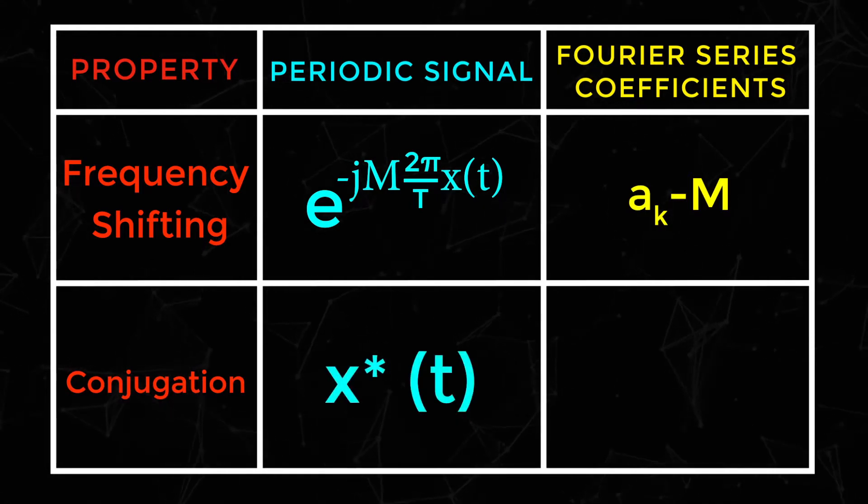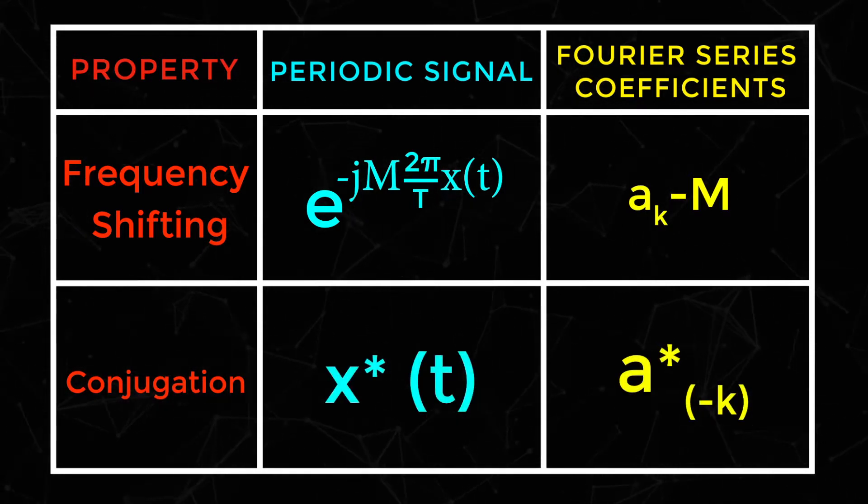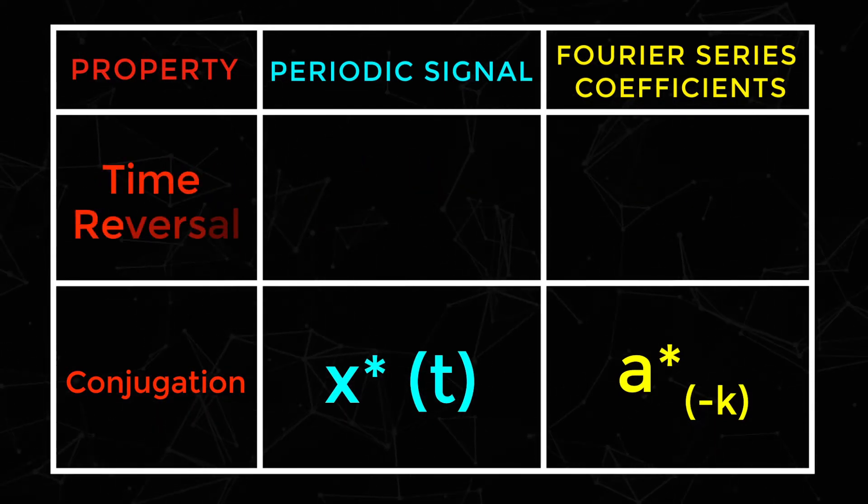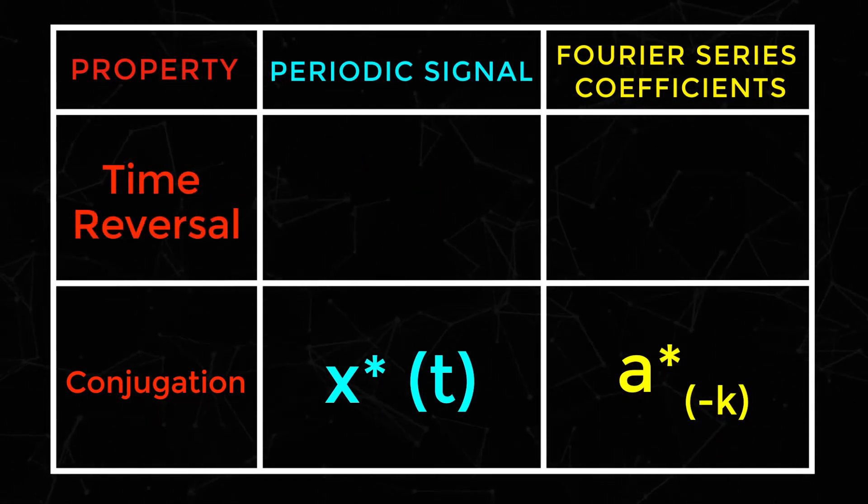Conjugation: Periodic signal conjugation of x of t, Fourier series conjugation of a of minus k. Time reversal: Periodic signal x of minus t, Fourier series coefficient a of minus k.